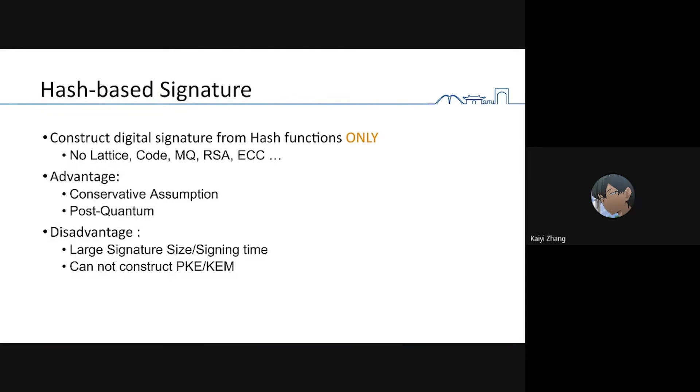Hash-based signature means we construct digital signature schemes from hash functions only. There is no lattice, no curve, no multivariate, no RSA, no elliptical curves.